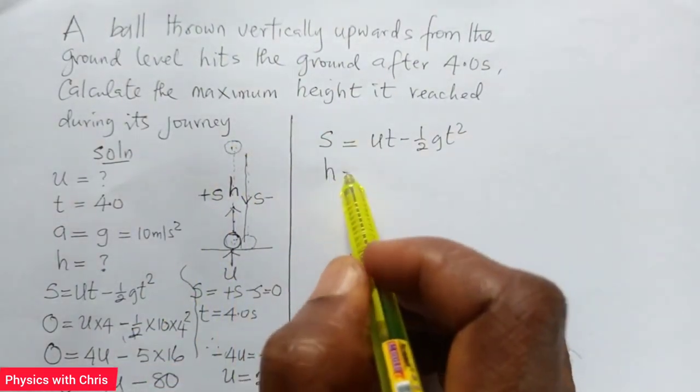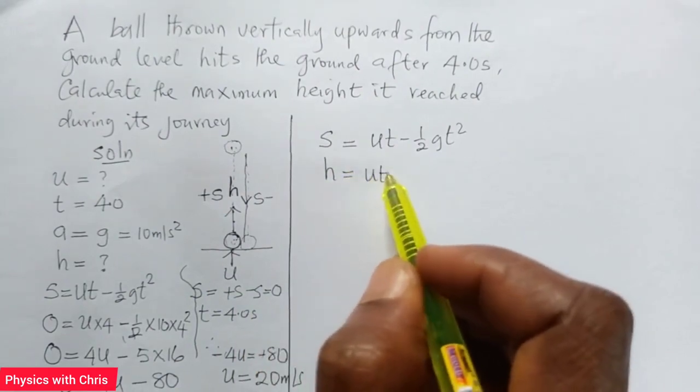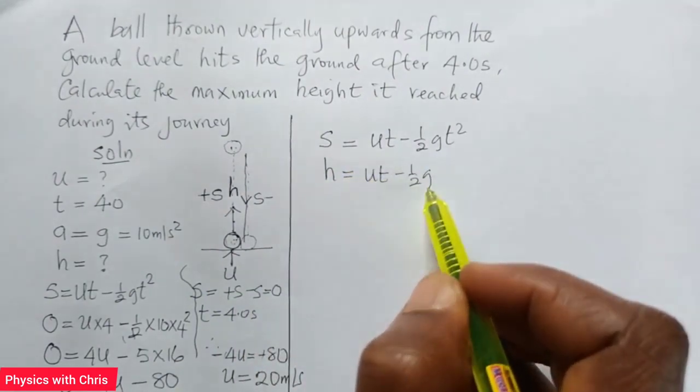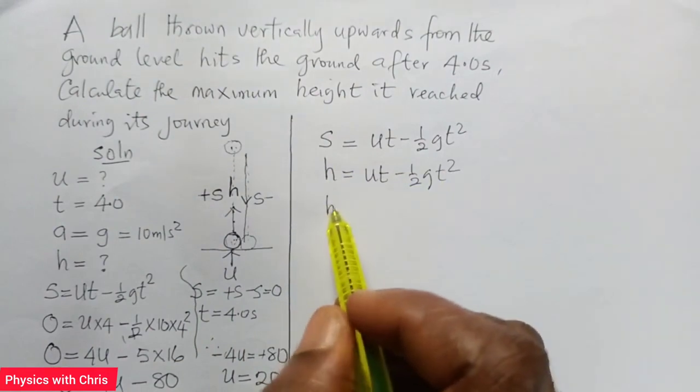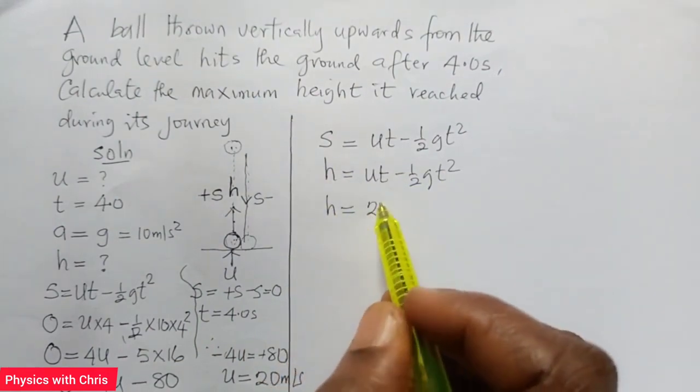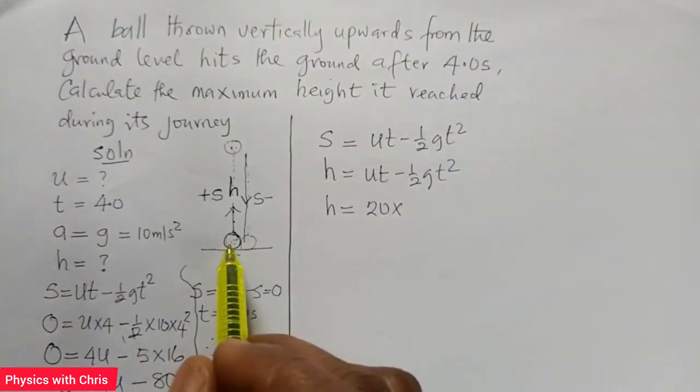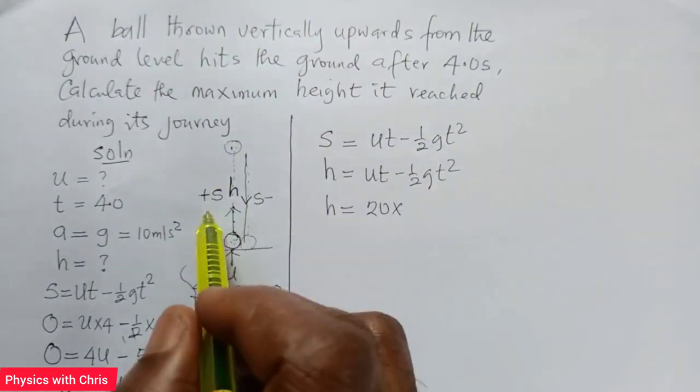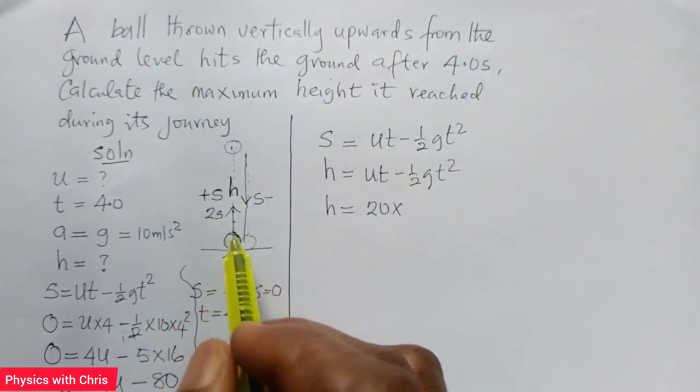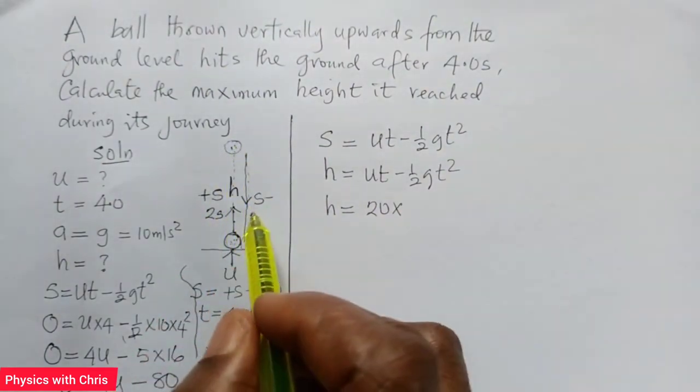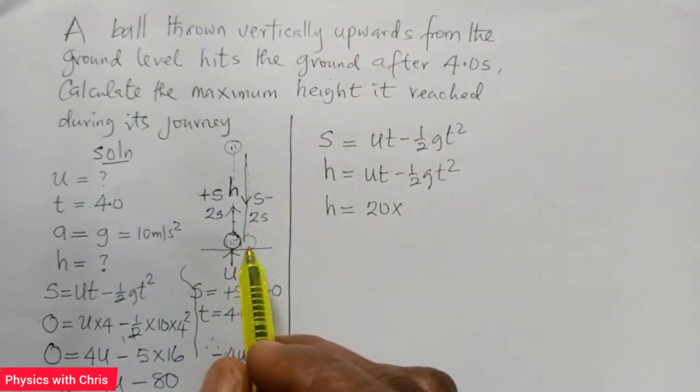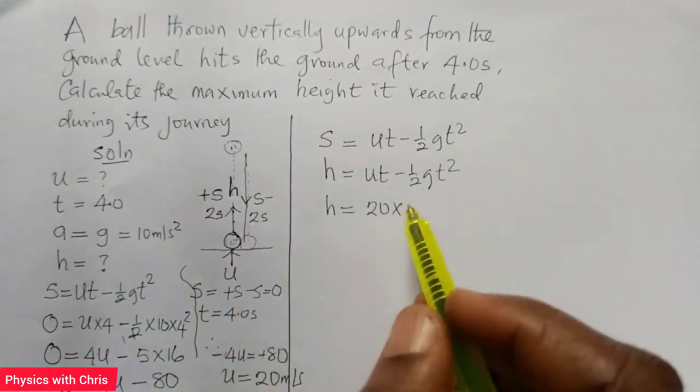So I can replace this with H equals UT minus half GT squared. So the time to rise from here to this point is 2 seconds, because it will take 2 seconds to rise and 2 seconds to fall back down to the plane of projection. So I put 2 here.